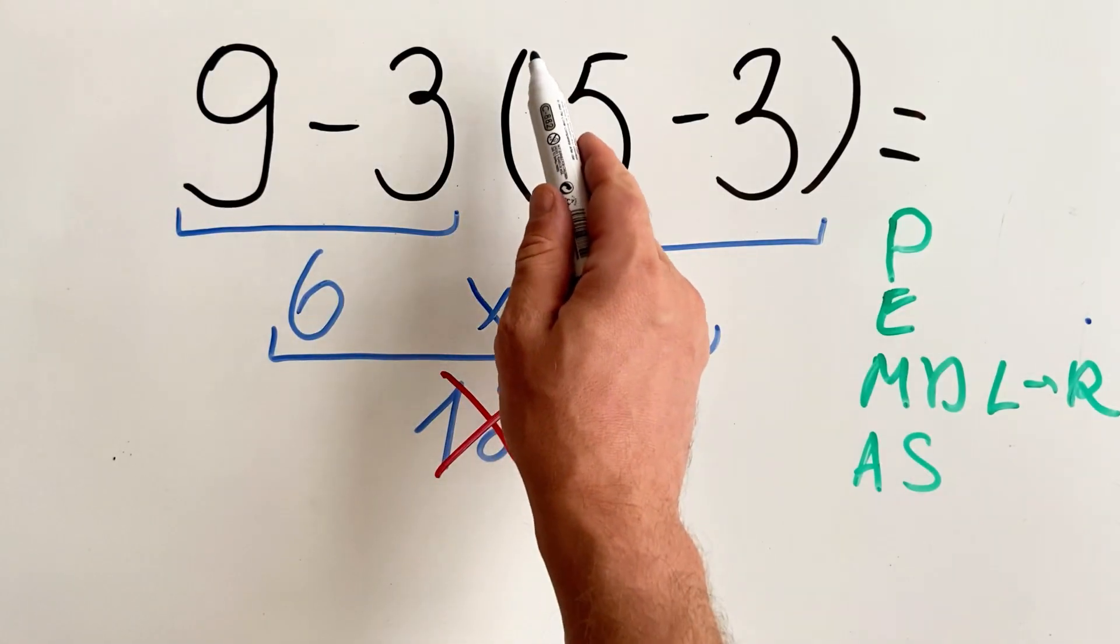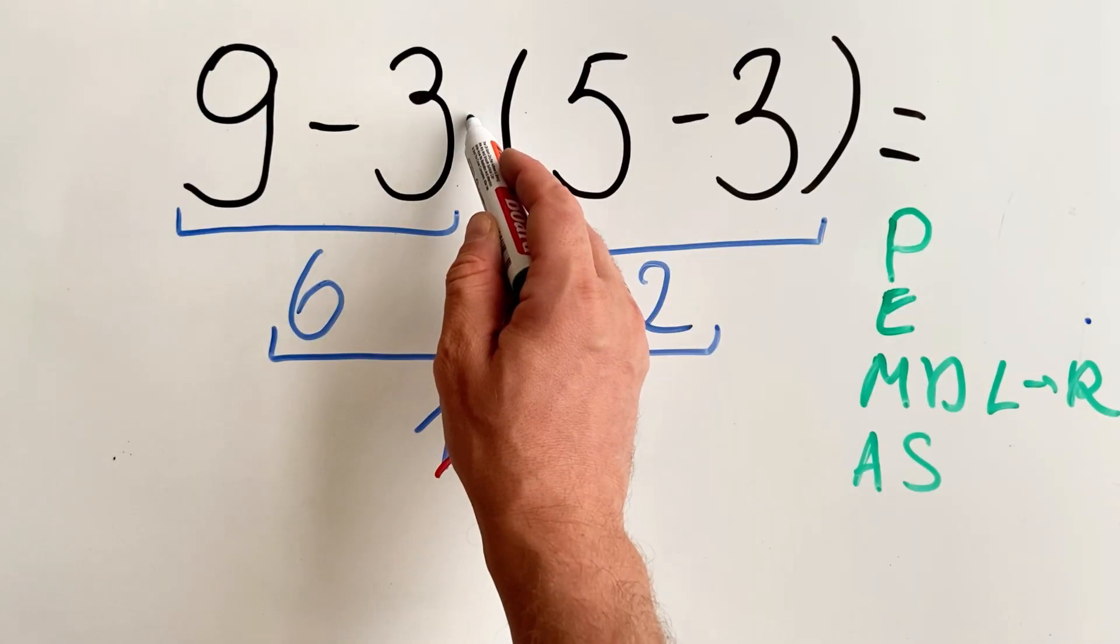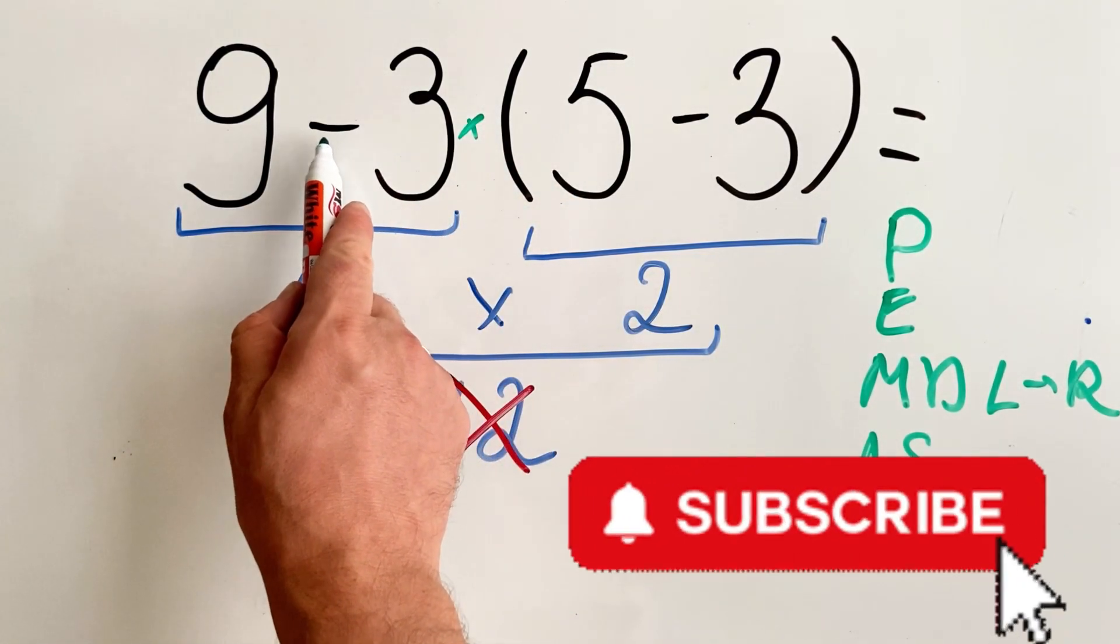In this case first we need to do what's inside the parenthesis, so we need to do 5 minus 3, then we do the multiplication, and only at the end we do this subtraction.